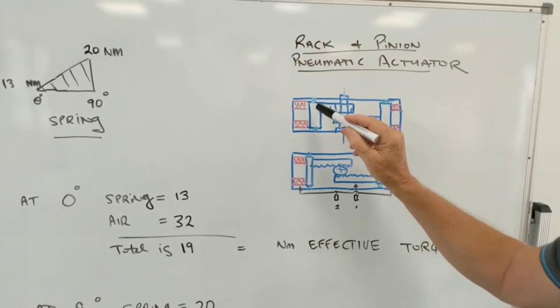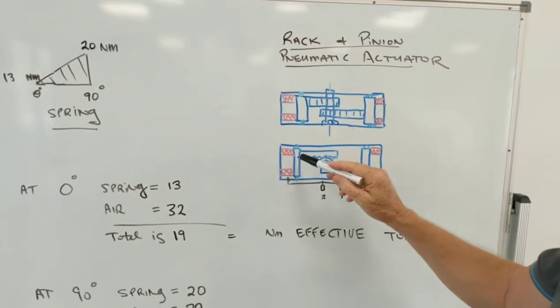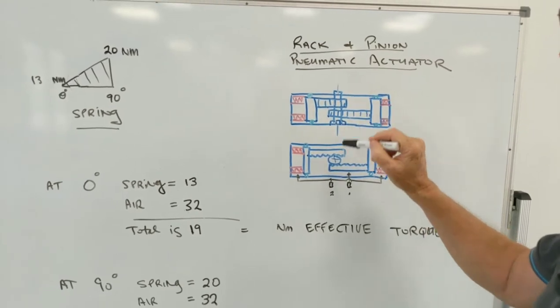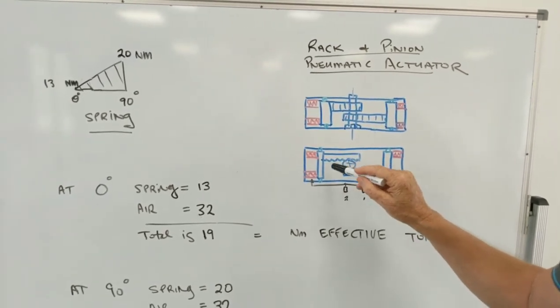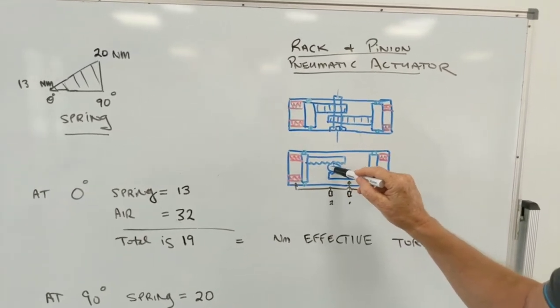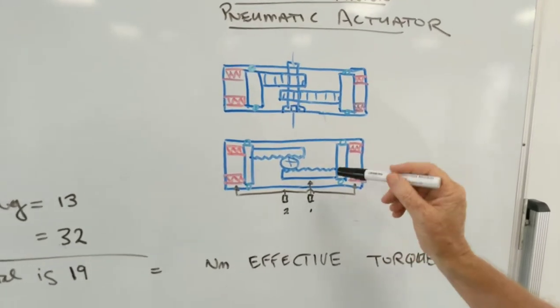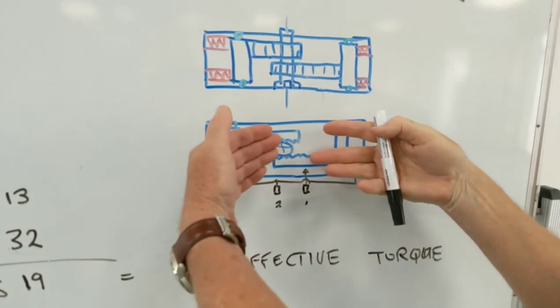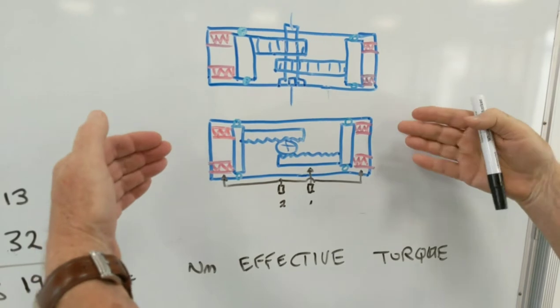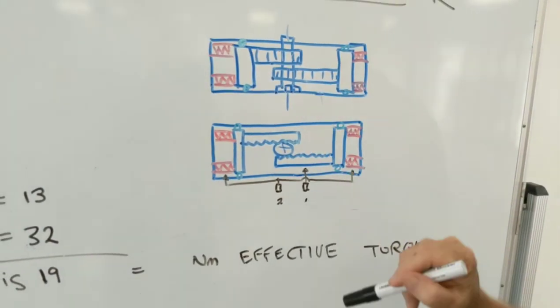The pistons are here which have got seals on them. This is looking down plan view. There's a rack driving the pinion and the springs push in that direction and the air pushes that way to operate your rack and drive your valve.